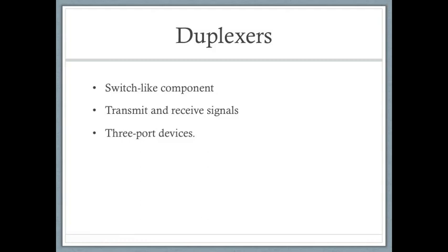A duplexer is a switch-like device that allows bi-directional communication over a single channel. In radio communication systems, it isolates the receiver from the transmitter while permitting them to share a common antenna. It is a three-port device comprising transmit and receive filters with a common antenna port, and must handle the output power of the transmitter and provide adequate rejection of transmitter noise at the receive frequency. A duplexer is associated with wireless LAN and mobile systems, while a diplexer is used in microwave system applications.